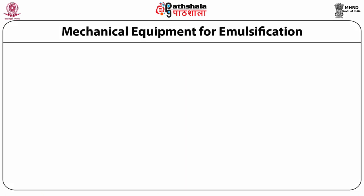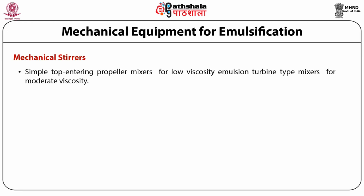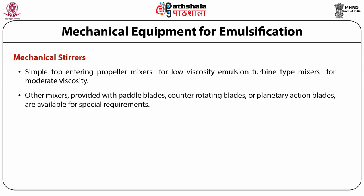Various types of equipment are available to affect droplet breakup and emulsification. Mechanical stirrers: an emulsion may be stirred by means of various impellers mounted on shafts placed directly into the system. Simple top-entering propeller mixers are available for low viscosity emulsions; turbine-type mixers for moderate viscosity emulsions; and other mixers with paddle blades, counter-rotating blades, or planetary blades are available for special requirements.